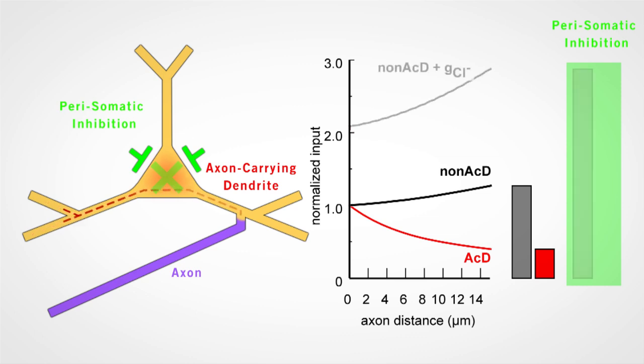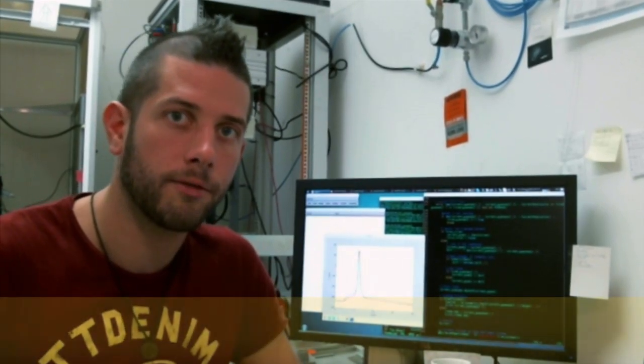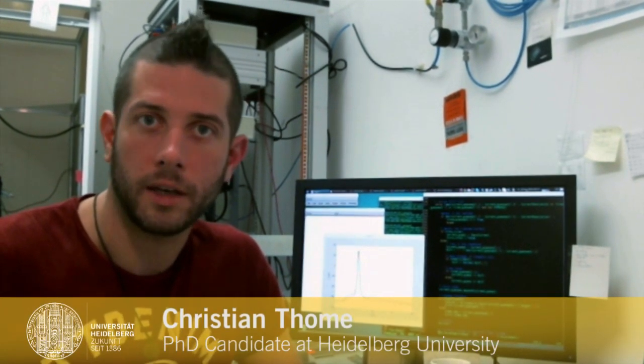Whereas dendritic input efficiency was generally reduced, we found that axon-carrying dendrites are able to maintain their strong impact on output generation. So we now believe that the asymmetry in signal integration between dendrites with and without the axon might be even more pronounced during in vivo network conditions.